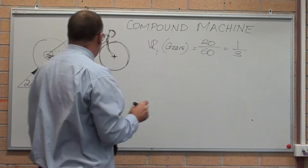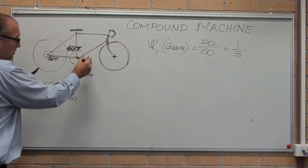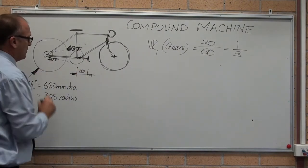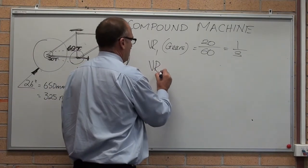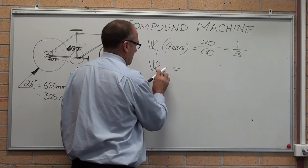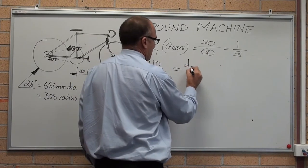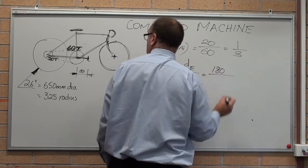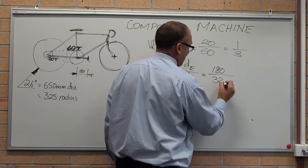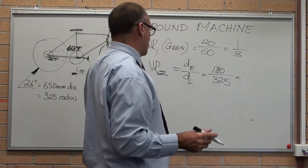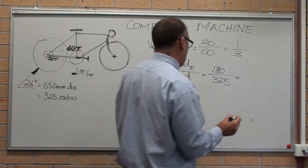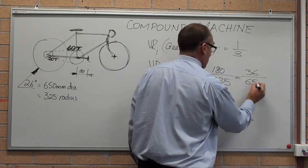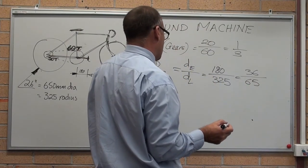Your second velocity ratio is how far this moves on the crank compared to how far the wheel moves. Effort, load. Velocity ratio 2 equals distance moved by the effort, divided by the distance moved by the load, equals 180 divided by 325. I'll just divide that by 5, 36 divided by 65, and that's about as far as that goes.